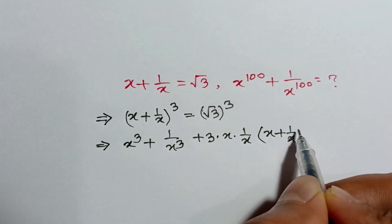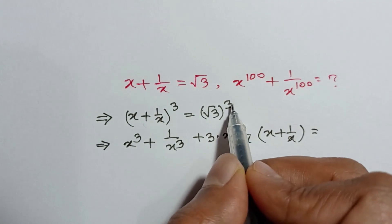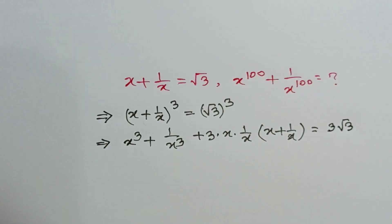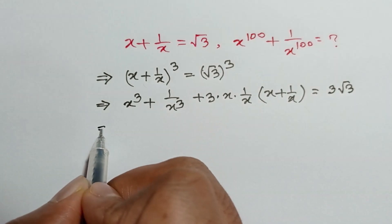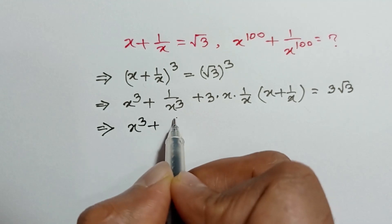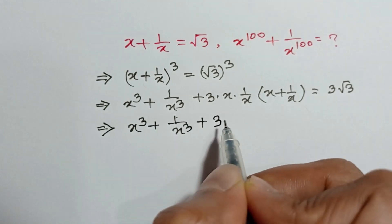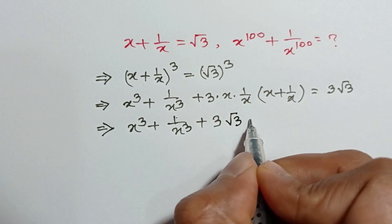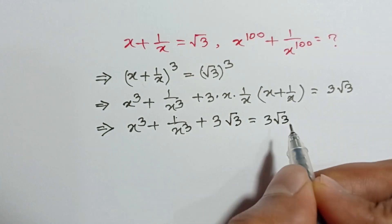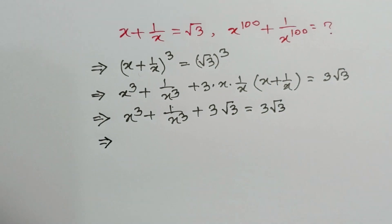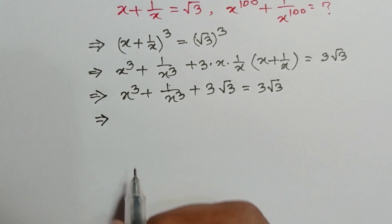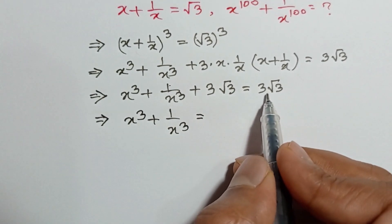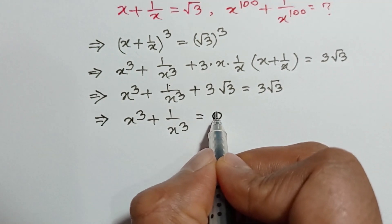This is equal to square root of 3 whole cube, which is equal to 3 square root of 3. So x cube plus 1 over x cube plus 3 times x — x cancels out — and x plus 1 over x is equal to square root of 3. Therefore x cube plus 1 over x cube is equal to 3 square root of 3 minus 3 square root of 3, which equals 0.